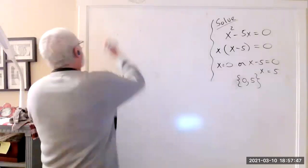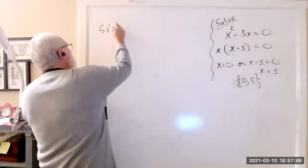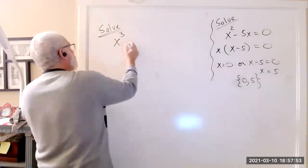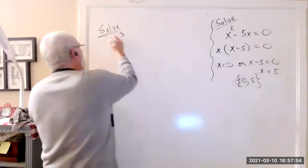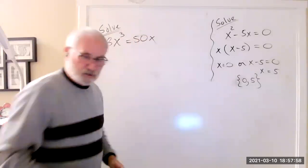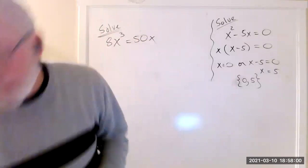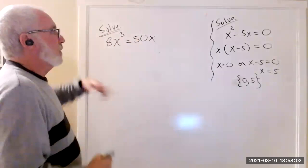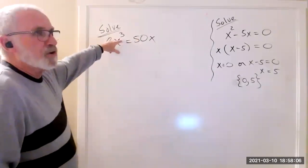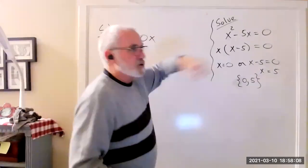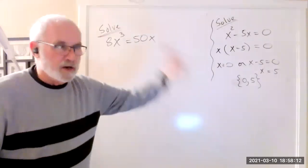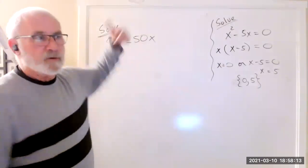Tied in with that is this problem: 8x cubed equals 50x. It's a power equation with cubes and squares, so it's going to follow those steps. First, it must equal zero. Rearranging gives us 8x cubed minus 50x equals zero, with the highest power first and the lowest power last. The coefficient of the highest power is positive — I really want that.